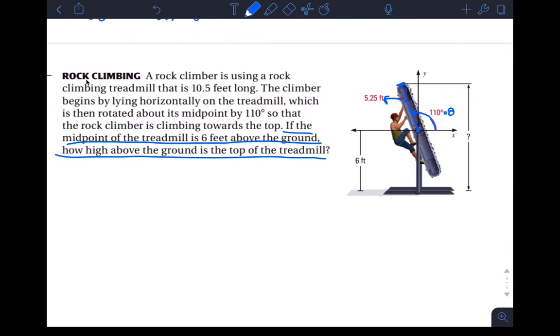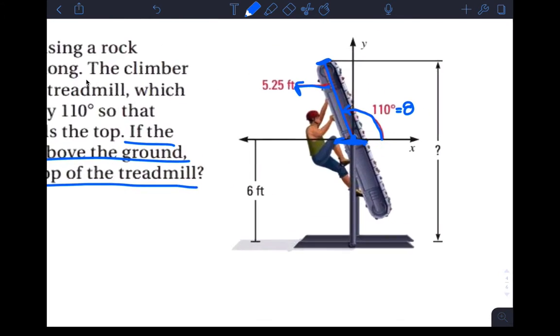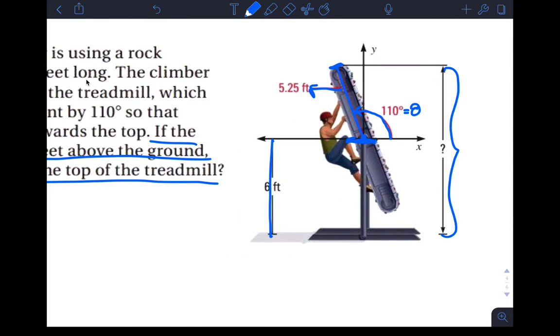And then from the midpoint to the top of the treadmill here, they're telling you is 5.25 feet, which is half of the 10.5 feet. So it says if the midpoint of the treadmill is six feet above the ground, how high above the ground is the top of the treadmill? Again, I'm not really sure how useful this is really in real life application, find the height of the treadmill, maybe just for installing it somewhere, but I mean, then you could just measure, I don't know. Any case, it's a problem solving question, so let's solve the problem. So they're telling us the midpoint right here is six feet above the ground.